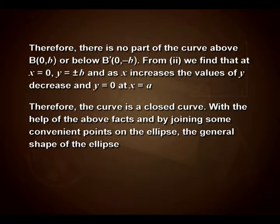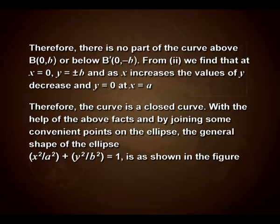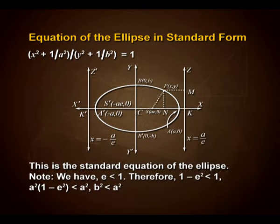With the help of the above facts and by joining some convenient points on the ellipse, the general shape of the ellipse x²/a² + y²/b² = 1 is as shown in the figure. We can see the axes x and x', y and y', the points A, A', B, B', and the figure of the ellipse.